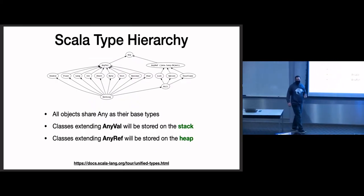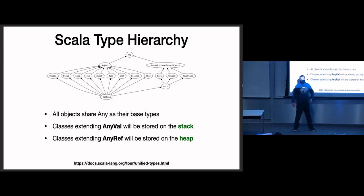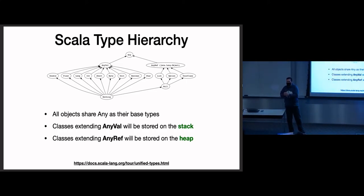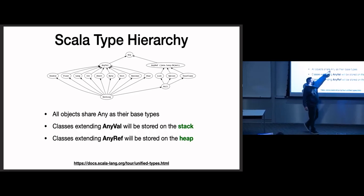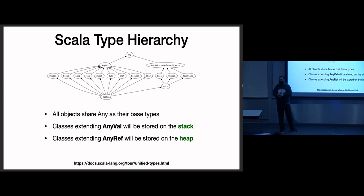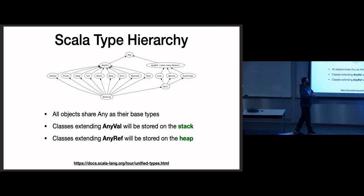Double, Float, Long, etc. all extend AnyVal. AnyVal extends Any. The functionality of AnyVal says anything of this type goes directly on the stack as a value. And anything that extends AnyRef — List, Option, Map, Array, any class you ever write that doesn't explicitly extend something, including our PhysicsObject at the end of our inheritance chain — implicitly extends AnyRef. Which means we store those objects on the heap, and on the stack is only a reference to that object.